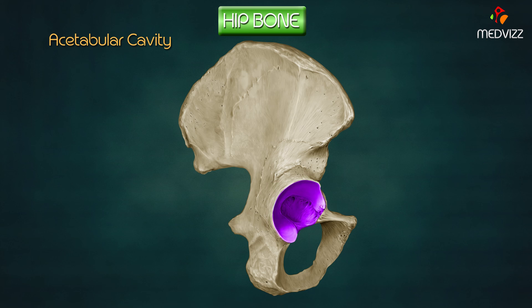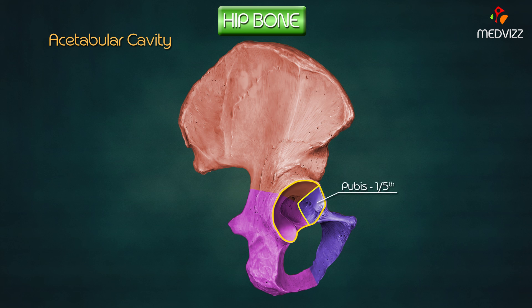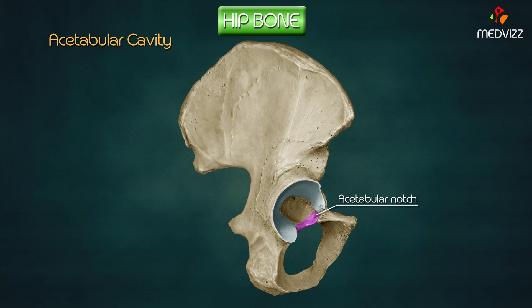The acetabular cavity is a deep hollow in the hip bone which faces laterally, downwards, and forwards, articulating with the head of the femur. All three hip bones contribute to its formation: pubis forms the upper and anterior one-fifth, ischium forms the lower and posterior two-fifths, and ilium forms the rest. The acetabular notch is a gap in the inferior part of the acetabular margin. The acetabular fossa is a rough non-articular area in the center covered with a pad of fat. The lunate surface is a horseshoe-shaped area that articulates with the head of the femur.